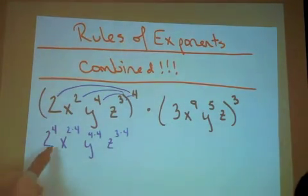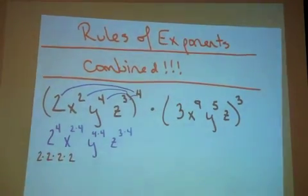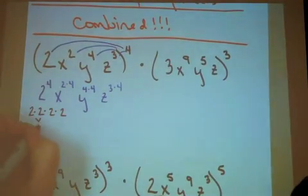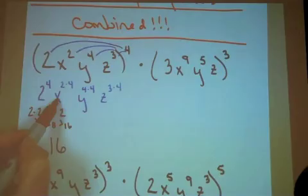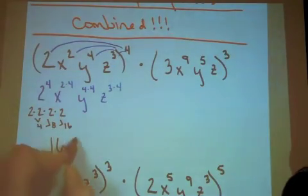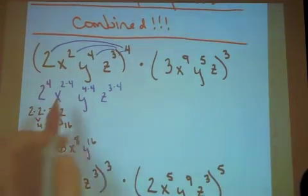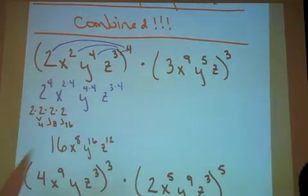Remember, what does it mean to do 2 to the 4th? That's 1, 2, 3, 4 2's, all being multiplied together. 2 times 2 is 4, times 2 is 8, times 2 is 16. So I have a coefficient of 16. x to the 2 times 4, that's x to the 8th. y to the 4 times 4, that's y to the 16th. And z to the 3 times 4, that's z to the 12th.